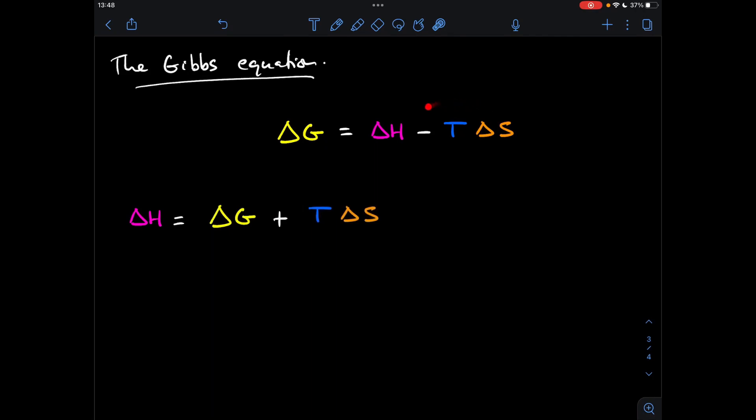So remember, all we're doing is when we take something over to the other side, it needs to do the opposite of what it was doing on the side we're moving from. So minus T delta S becomes plus T delta S.